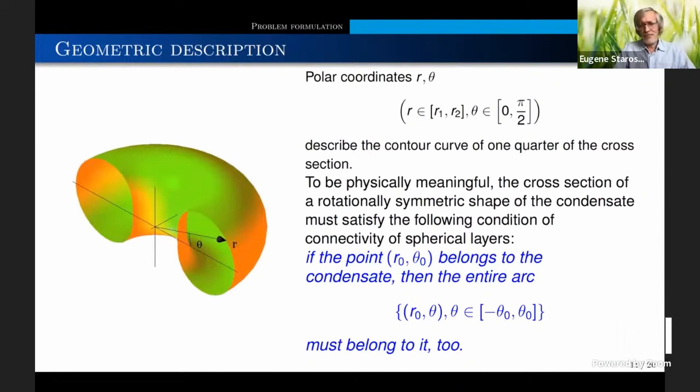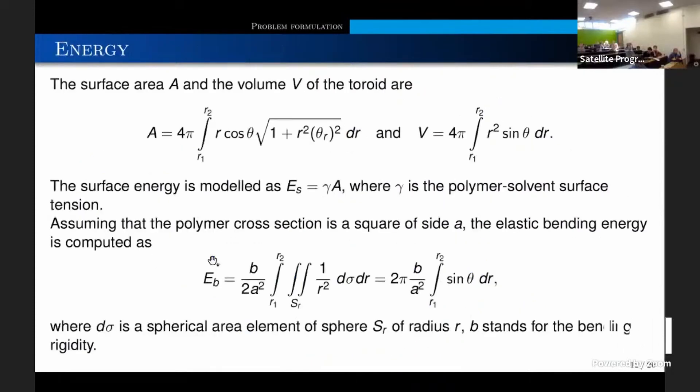The concentric spool model is not the thing that I just invented. It exists in the literature and is already discussed in the description of DNA packing in the capsids. This is the cross-section of the toroid. I introduced the polar coordinates from the axis of rotation R to the contour curve of the cross-section. I just consider one quarter because of the symmetry, starting from this point to this point. The contour is R of theta. And the important thing is this is the condition for the concentric spool model. If I have a point that belongs to the condensate, the whole arc should be inside.